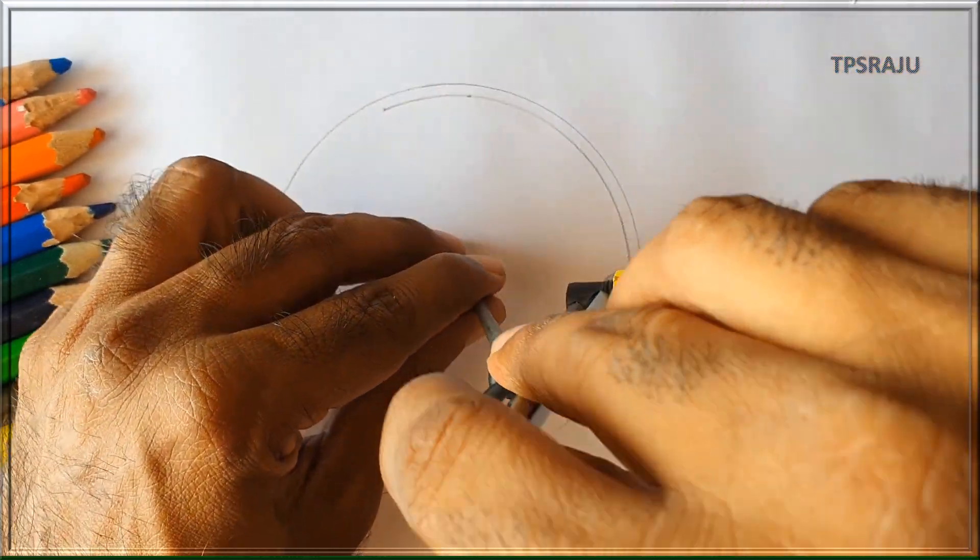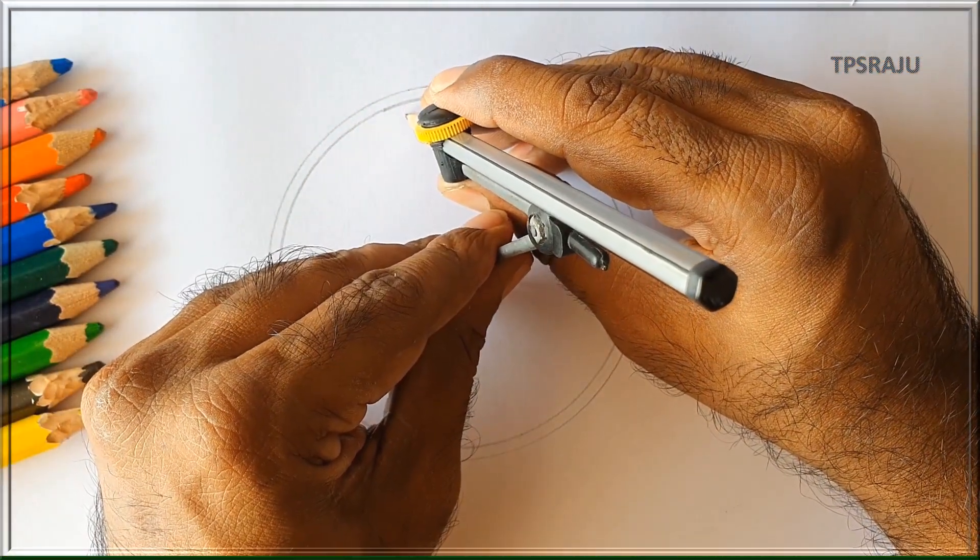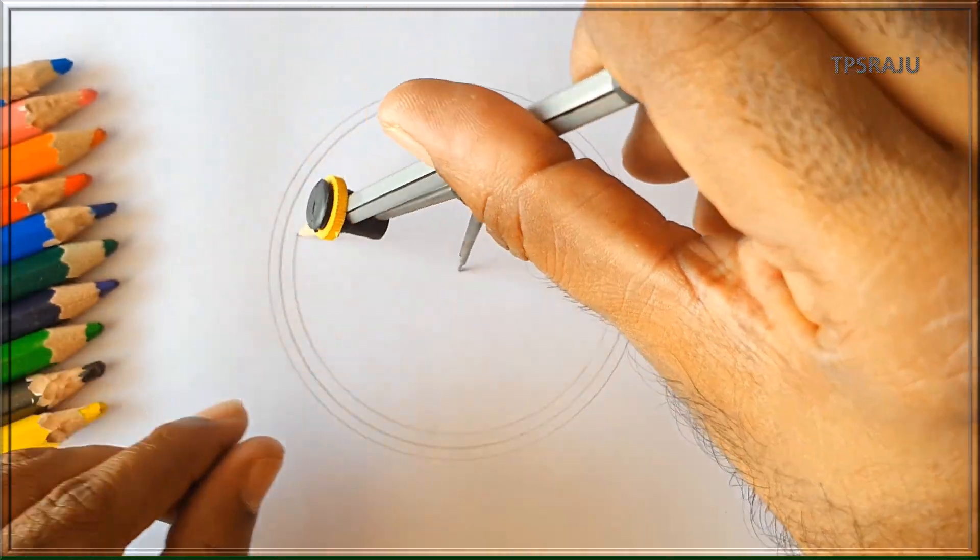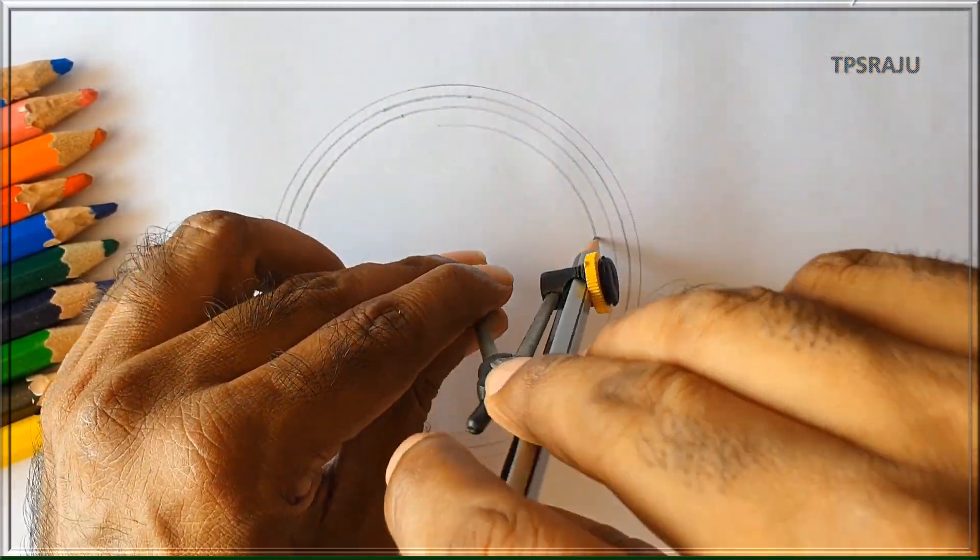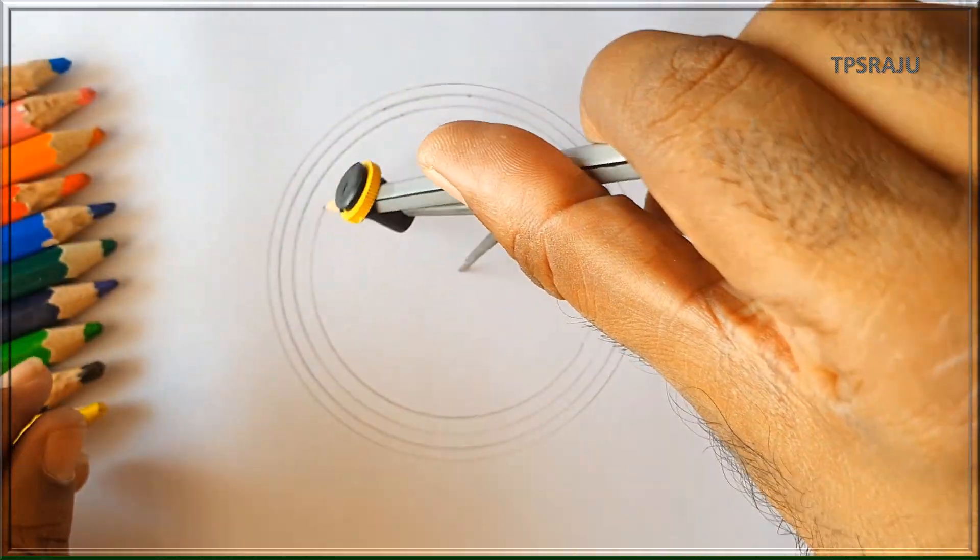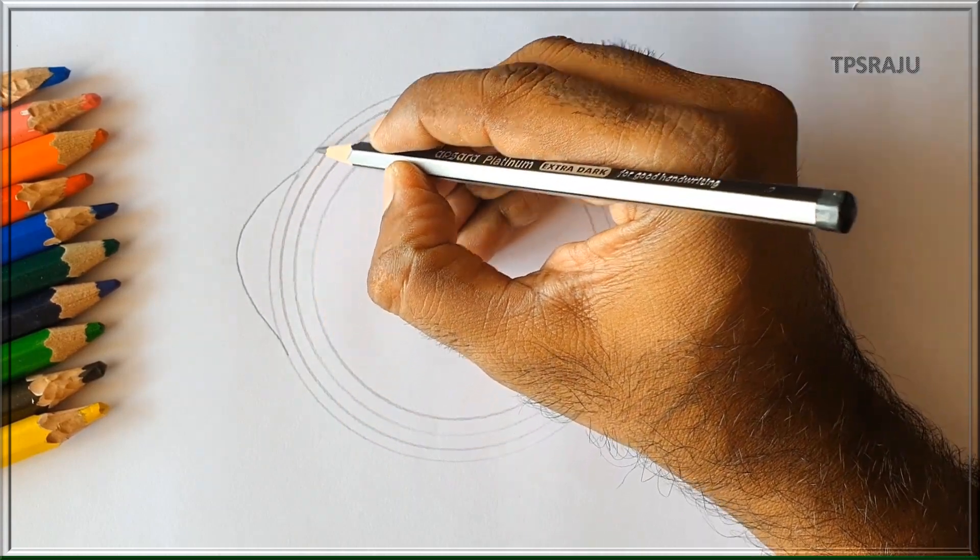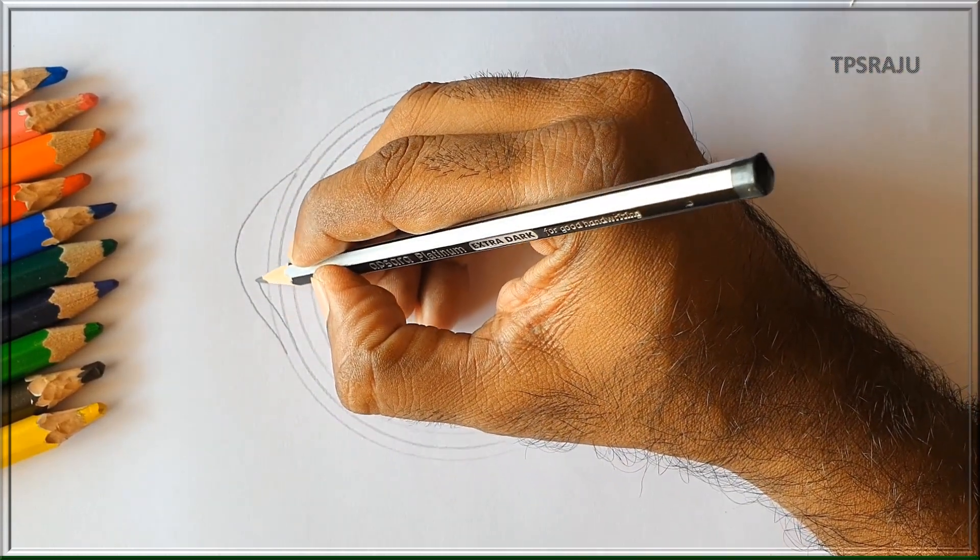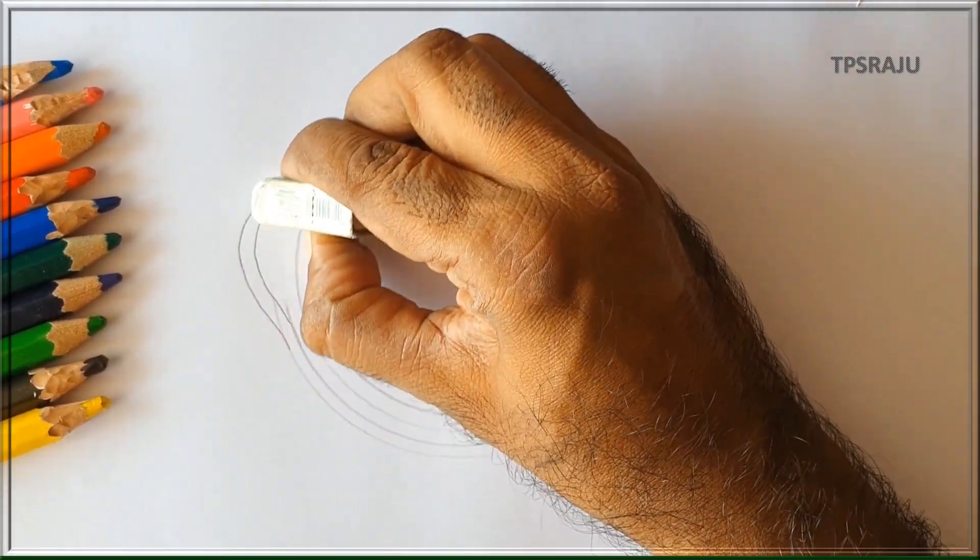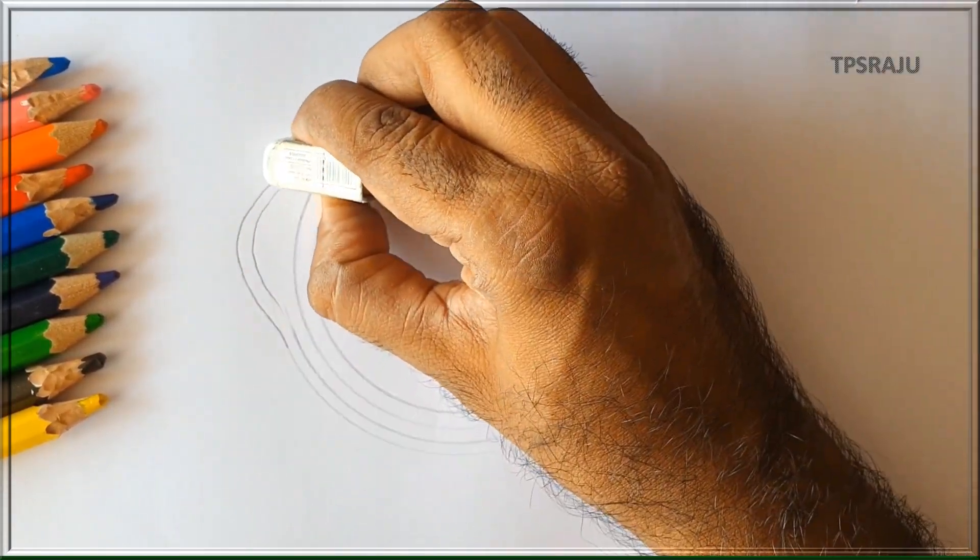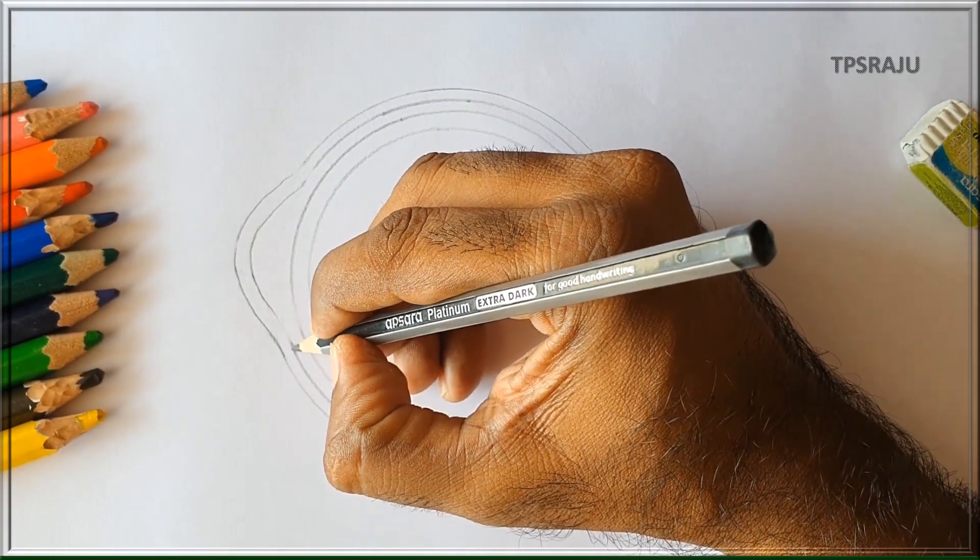Step one, step two - we'll take each step systematically. Now we will look at the different layers. Let's start with the sclera. This is the sclera layer.